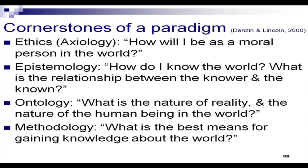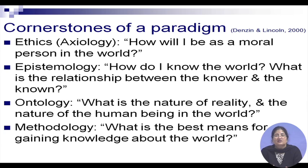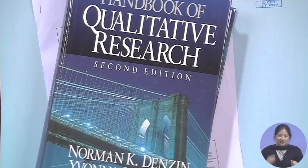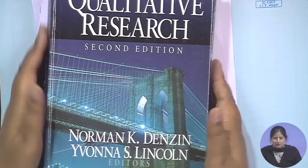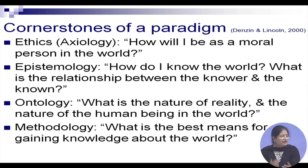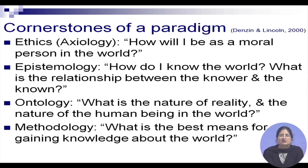What are the cornerstones of a paradigm? The first is ethics or axiology — how will I be as a moral person in the world? This is from the Handbook of Qualitative Research Methods edited by Denzin and Lincoln. Axiology deals with how I treat the research process: what is my anchor, what do I explore, what is sensitive information, and where do I draw the line?